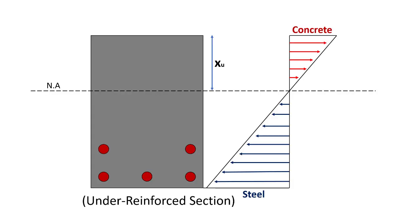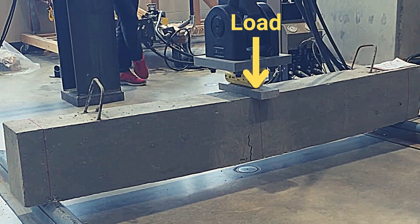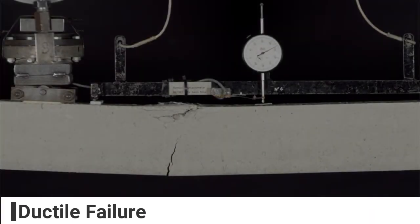The under reinforced section is designed in such a way that the permissible strength of steel is less as compared to concrete, so that after the application of load on this particular member, the failure of steel takes place prior to the failure of concrete. Such type of failure is known as ductile failure or under reinforced failure.